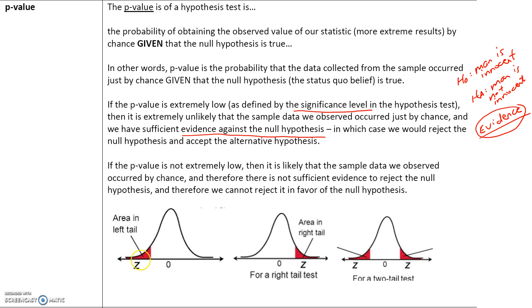There are three types of tails: a left tail, a right tail, and a two-tail test. We will talk more about this during class.